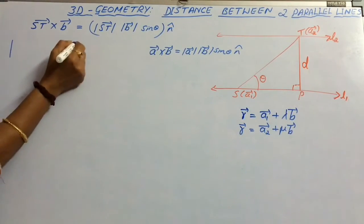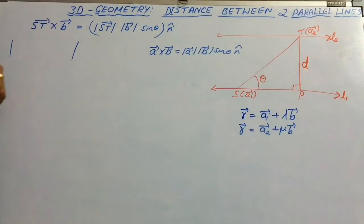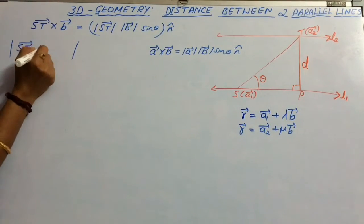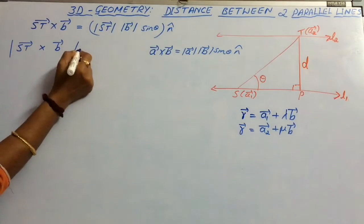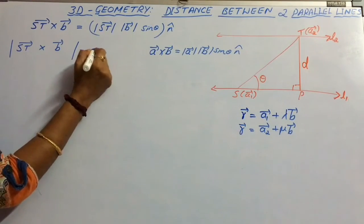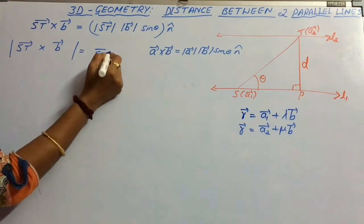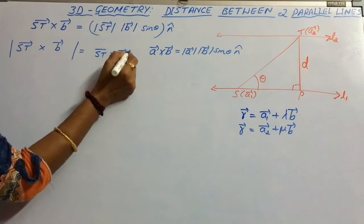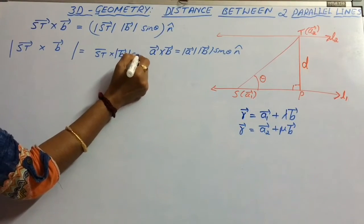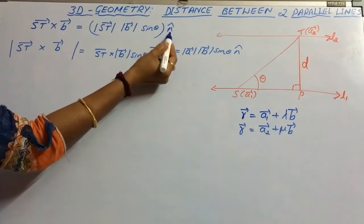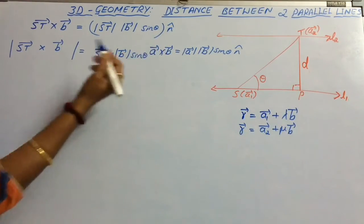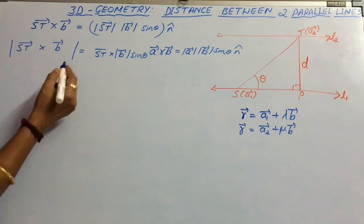Now consider the magnitude on both sides. |St cross b| equals magnitude of St, let it be equal to length St, times magnitude of vector b times sin theta times |n cap|. Since |n cap| equals 1 because n is a unit vector.